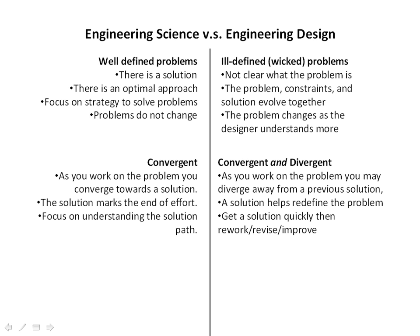Engineering design problems can be both convergent and divergent. As you work on a problem, you may converge toward a solution, or you may have a new realization that causes a divergent leap — diverging away from a previous solution when you realize it won't work or doesn't fit the constraints. Any solution helps you redefine the problem. So converging on solutions quickly, then reworking, revising, and improving those solutions tends to be a focus of design work, unlike engineering science work where you're really trying to solve a fairly narrow problem correctly.